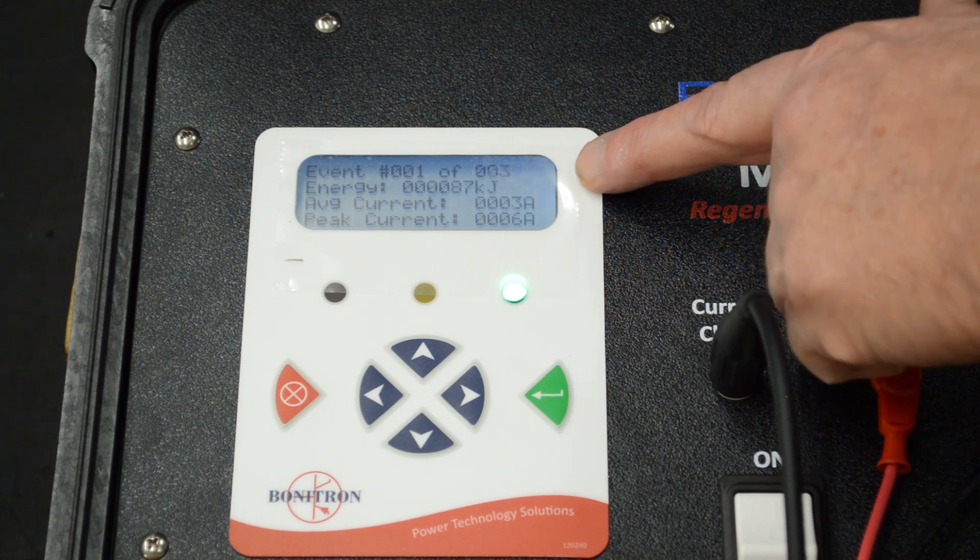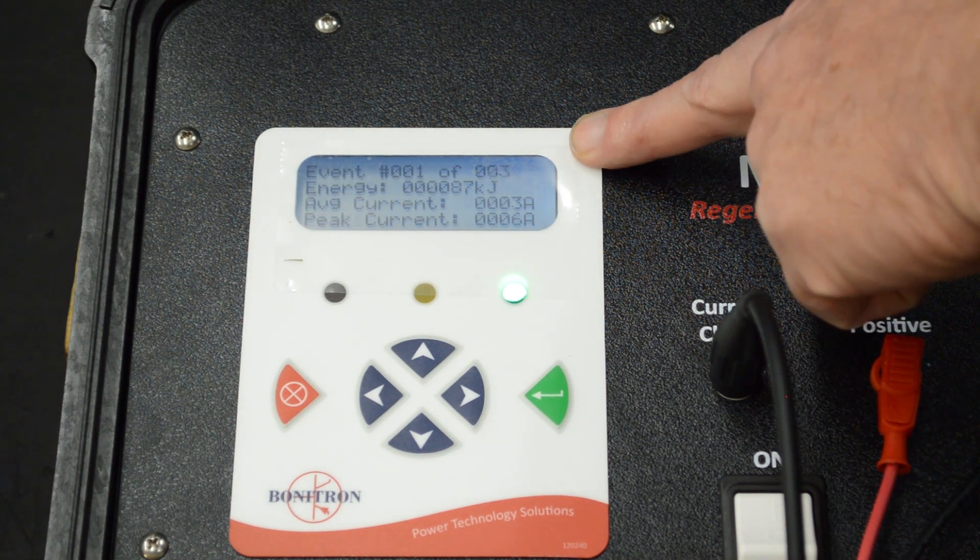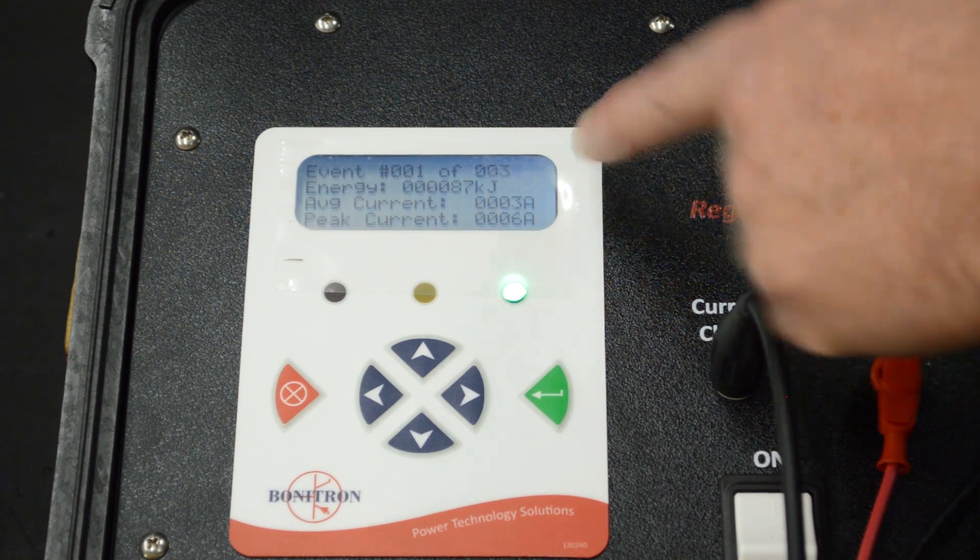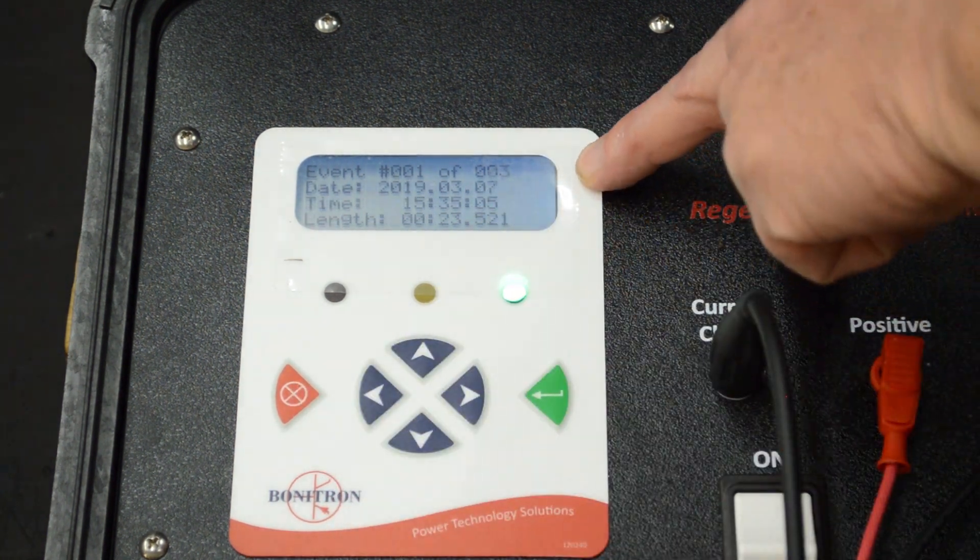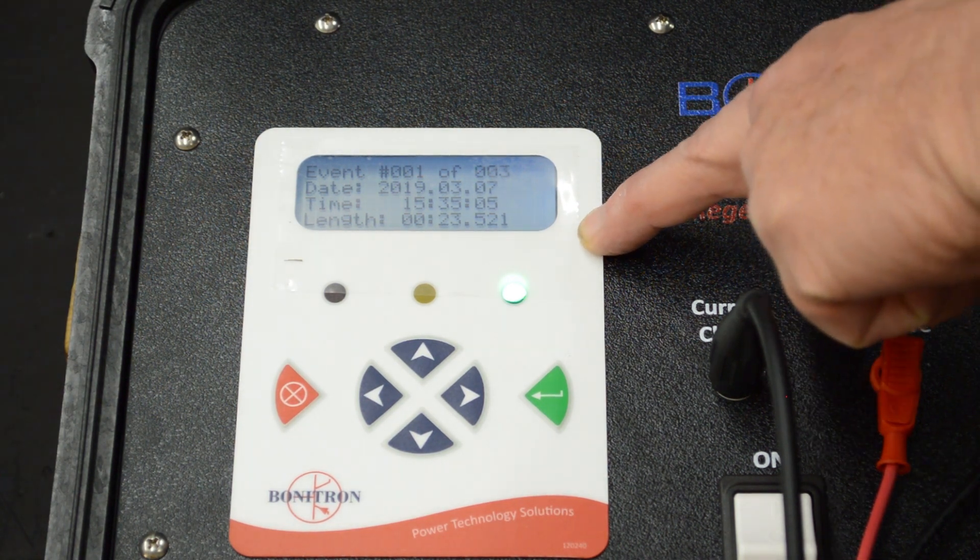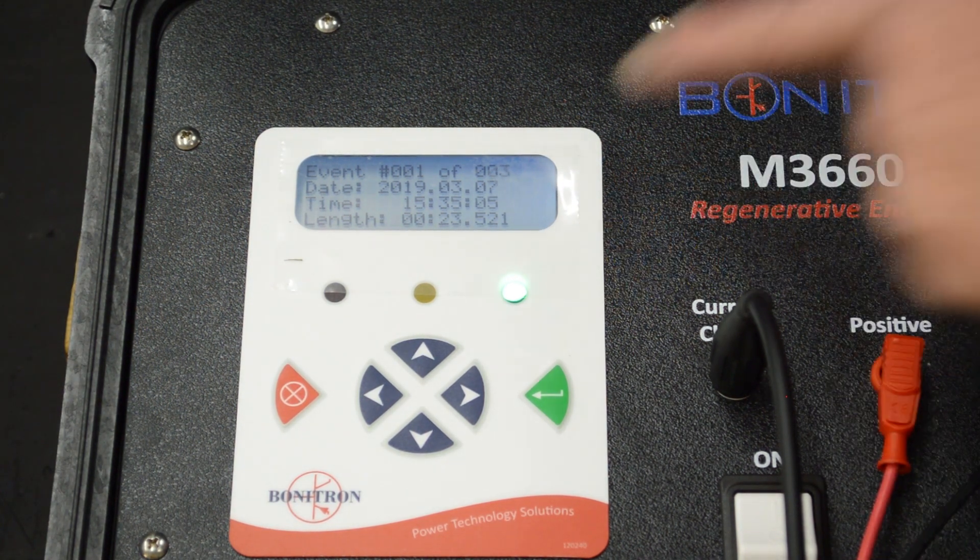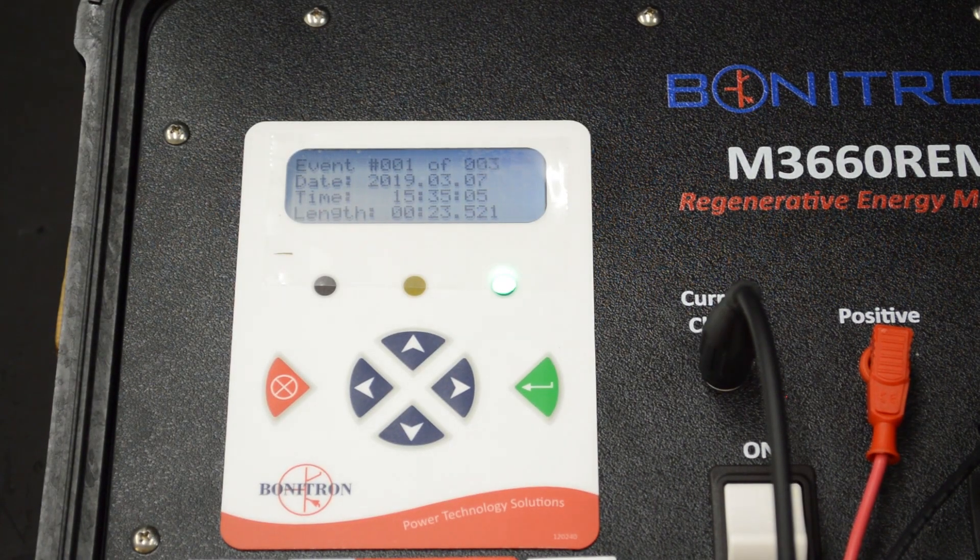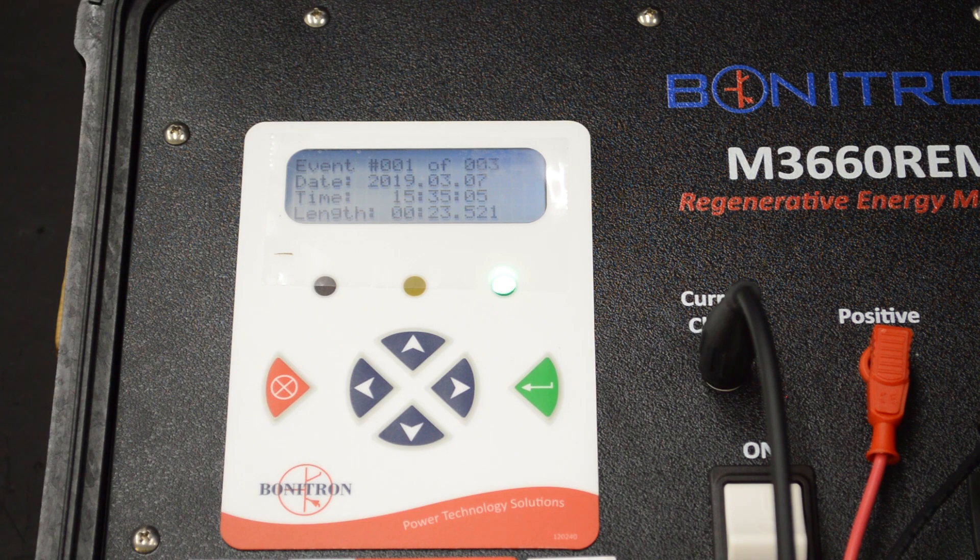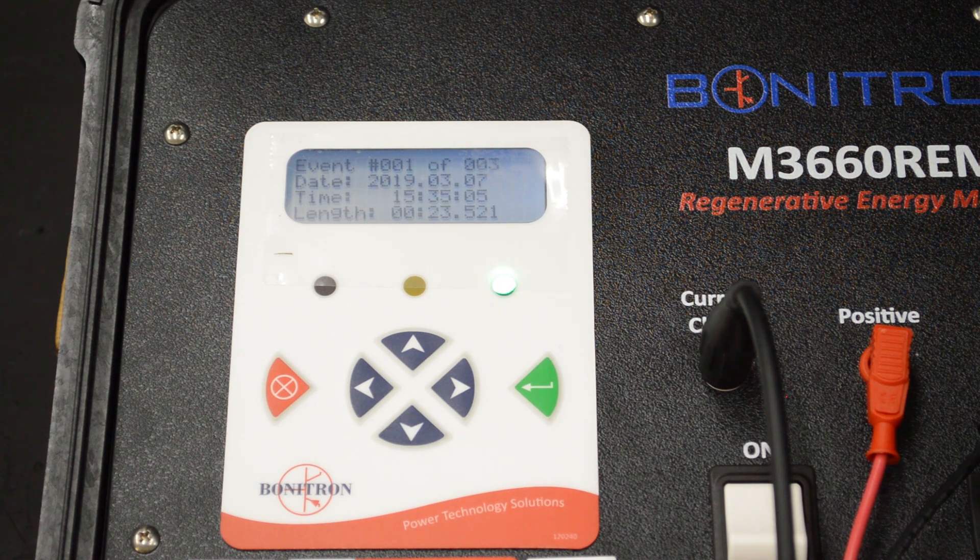Shows you the energy in kilojoules. It has a regen event number, average current, peak current. Gives you the date of the event, the time, and the length of the actual regen energy event. So what you can do is you can take this information and you can determine if your braking solution is adequate, or if possibly you need more dynamic braking, or you could use a line regen for your regen profile.